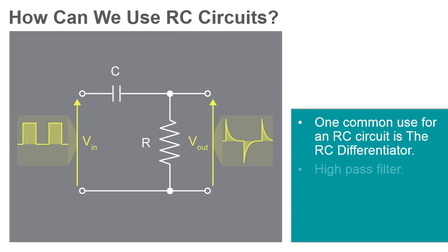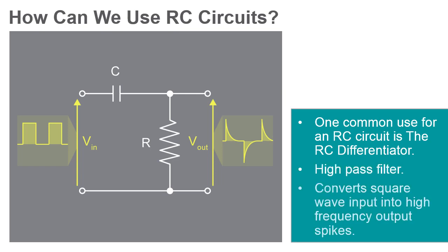The differentiator is a high-pass filter circuit that can convert a square wave input into high-frequency spikes at its output. If the time constant is short compared to the time period of the input waveform, then the capacitor will become fully charged more quickly before the next change in the input cycle.